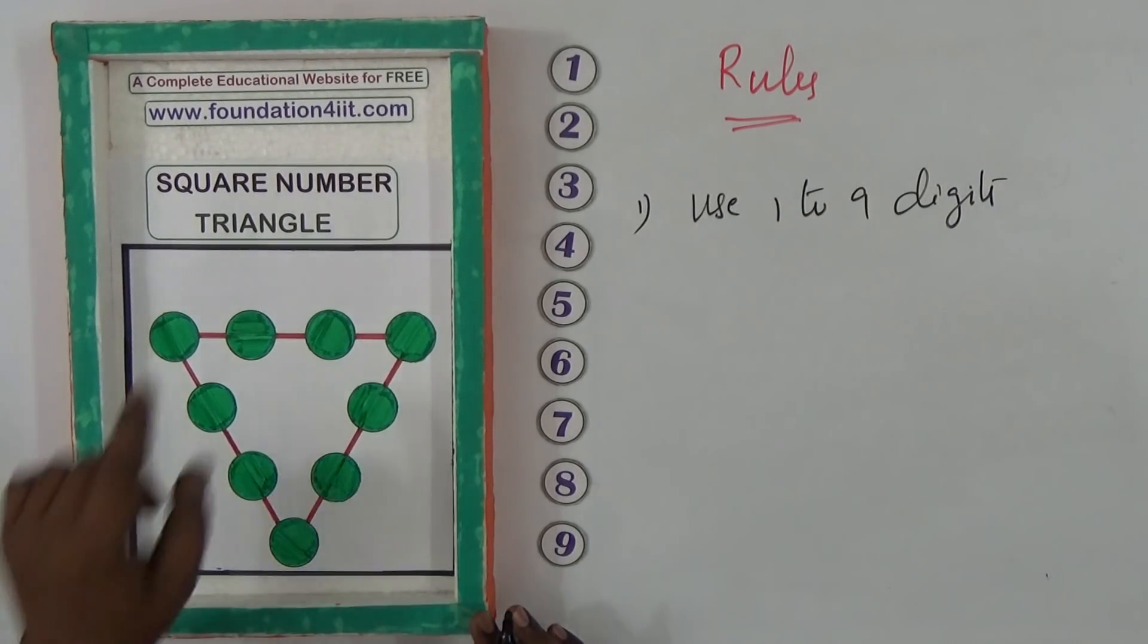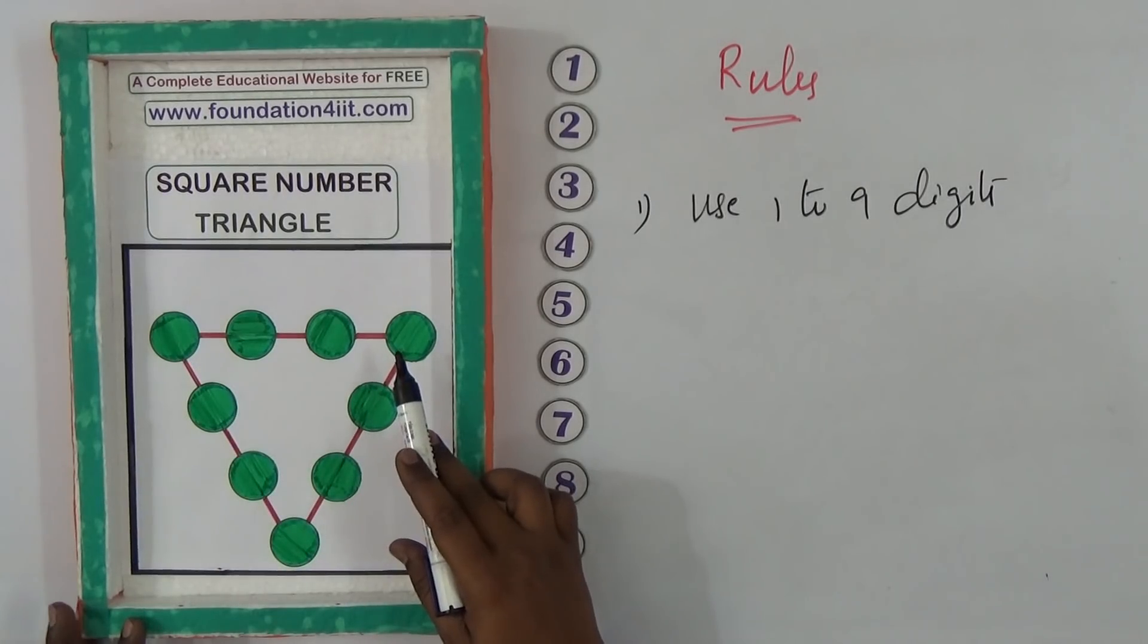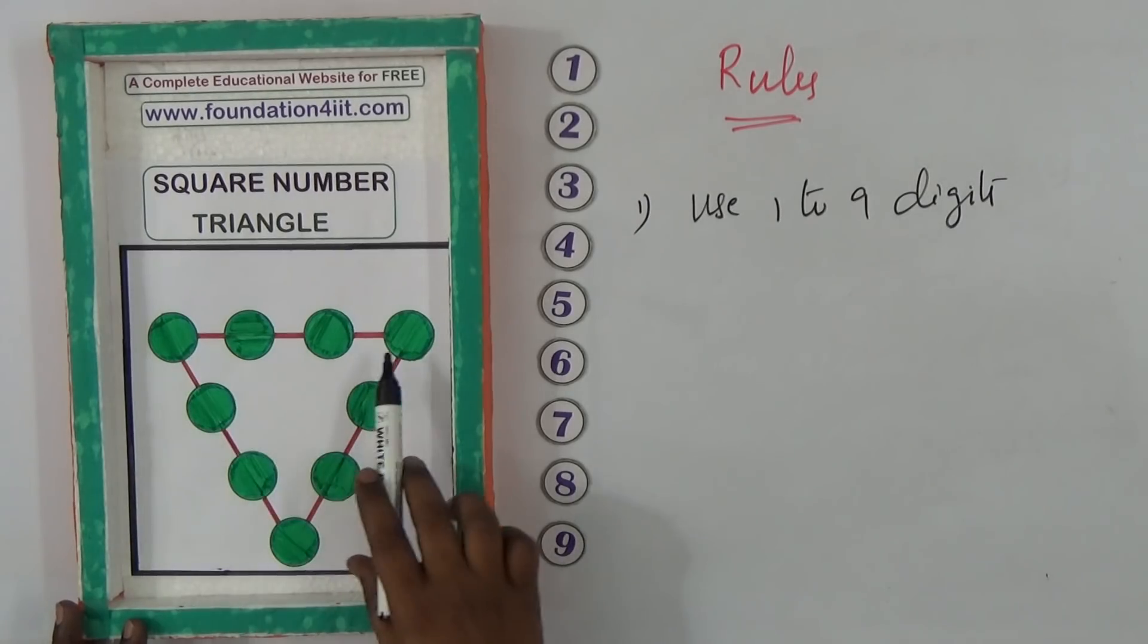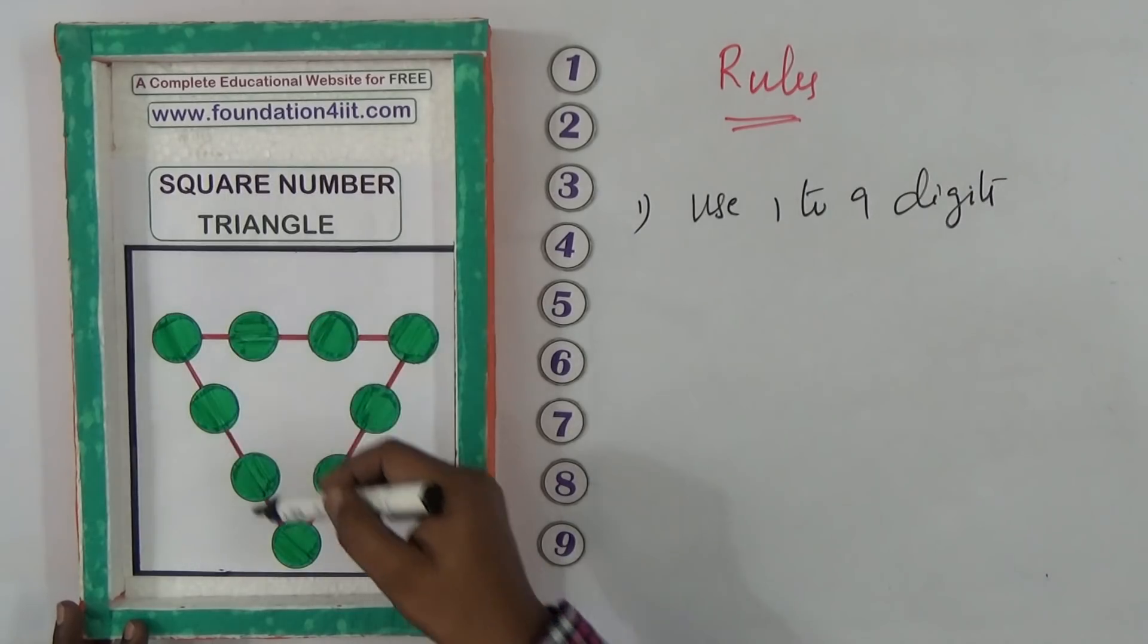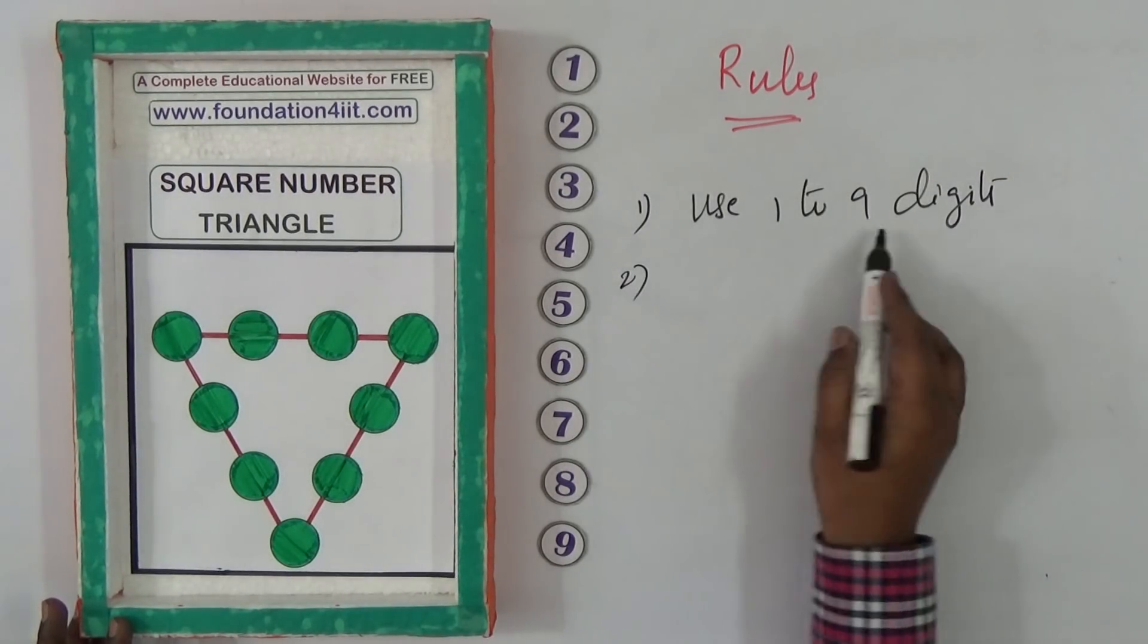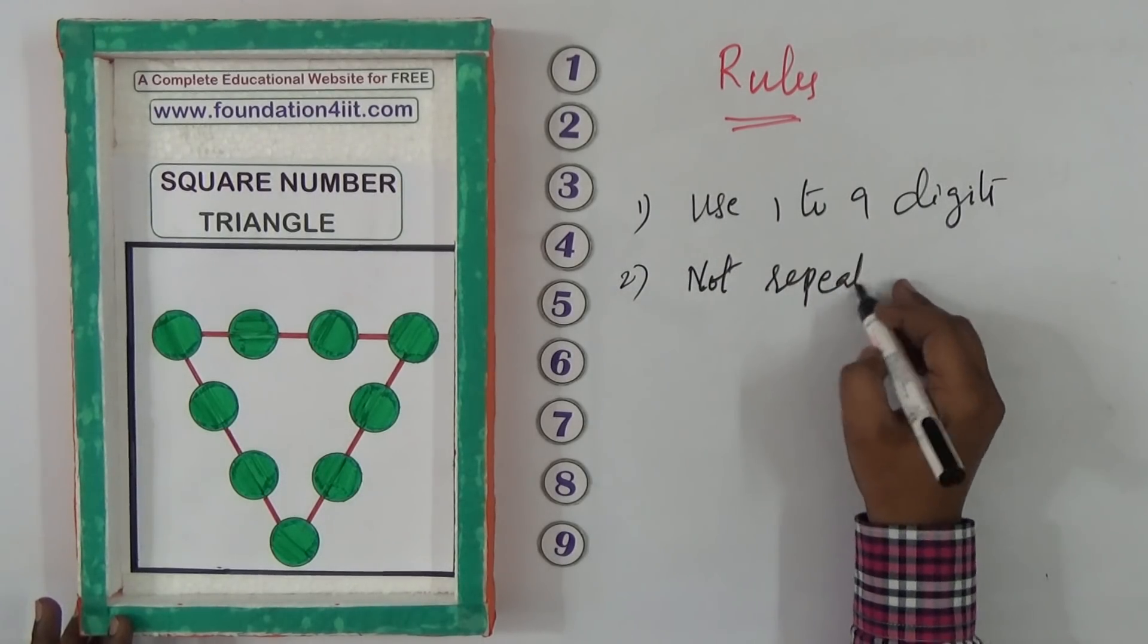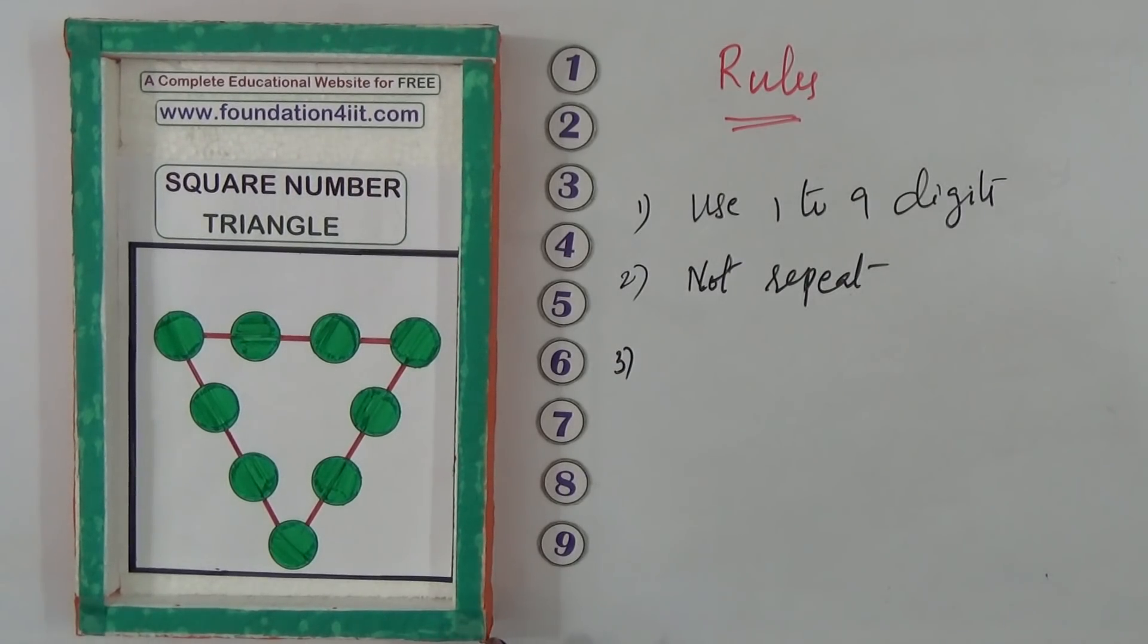How we need to arrange: these four numbers' squares sum should be equal in every straight line. These four numbers' squares sum, these four numbers' squares, and these four numbers' squares sum also should be equal. Use only one to nine digits and not repeat.